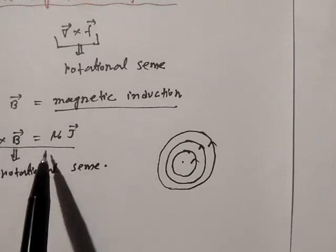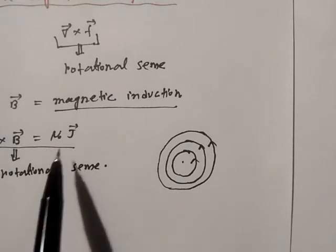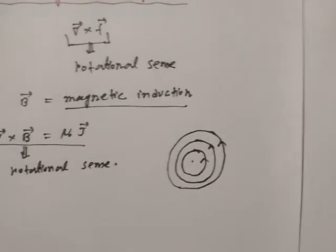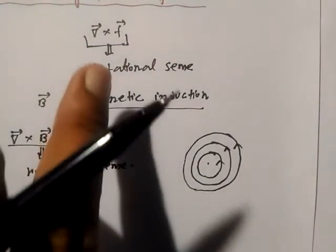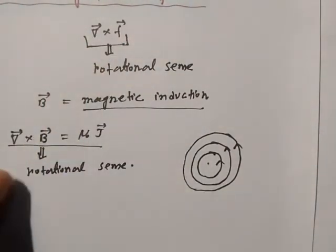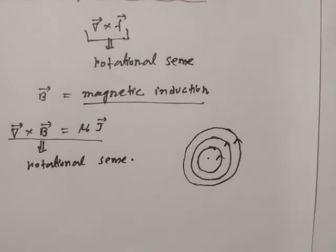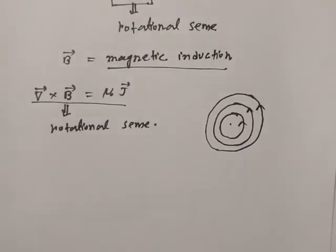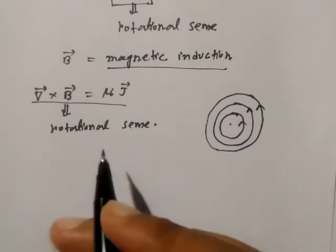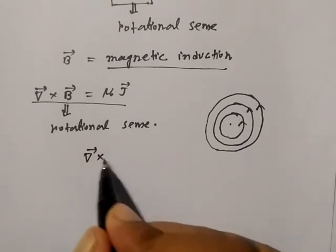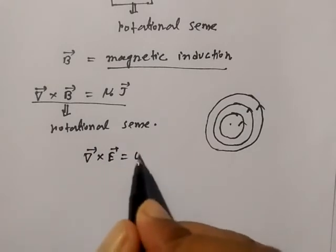The curl of the magnetic field does not vanish; it has a finite value. So B has a rotational sense and a non-zero curl. The curl of a vector function physically signifies the rotational sense only. For the electric field, however, curl of E equals zero.